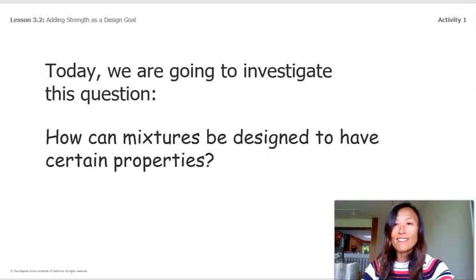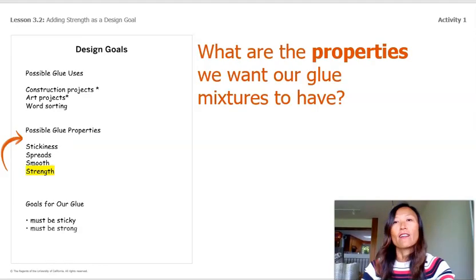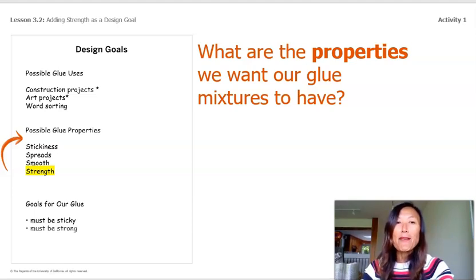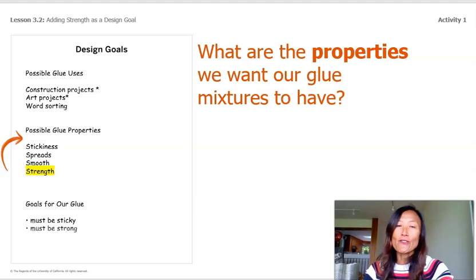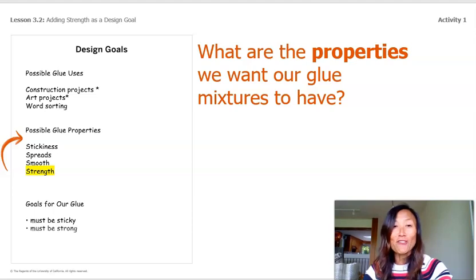Today we're going to investigate this question: How can mixtures be designed to have certain properties? The property we want our glue mixtures to have is strength — it must be strong. Over the next few lessons we'll be working to answer our investigation question as we figure out how to make a glue that is both sticky and strong.